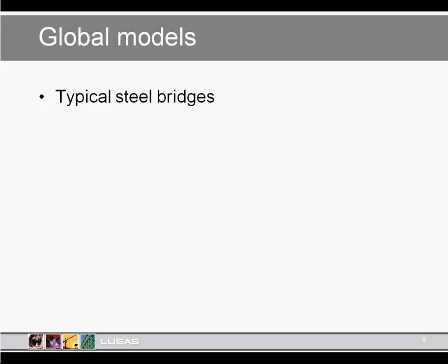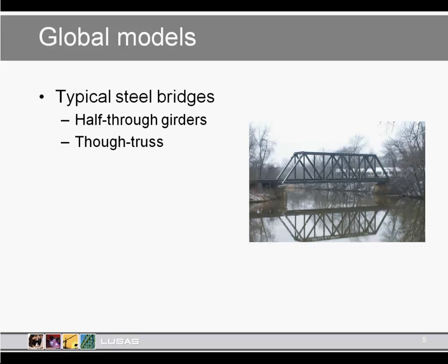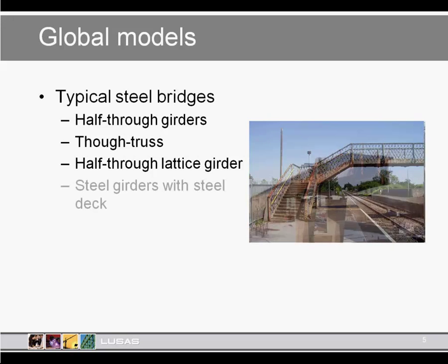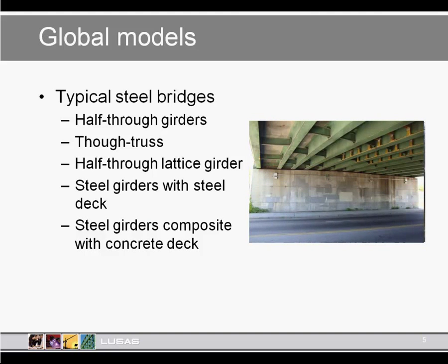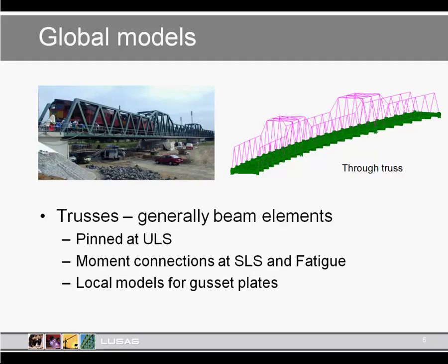Starting with global modelling, it's useful to consider some of the main steel bridges we might be looking at in assessment. These would include half-through girders, through trusses, half-through lattice girders, steel girders with steel composite deck, and steel girders acting composite with a concrete deck. For truss bridges, where particular concerns exist in assessment, whilst these might be assumed pinned in ultimate limit state, we may need to consider moment resistance in the connections for serviceability and fatigue calculations.